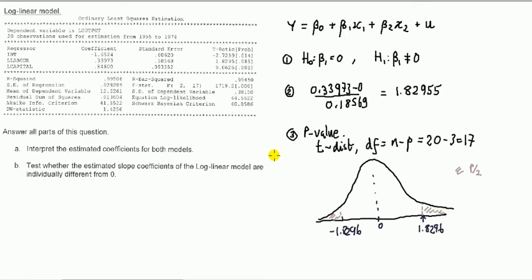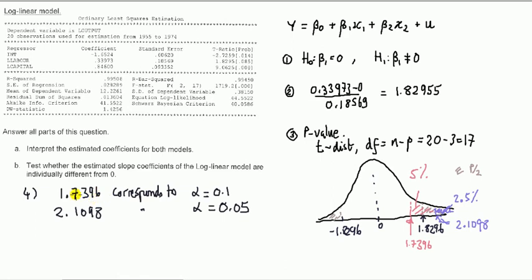In practice it turns out to be a pain because we're using old technology and our tables don't give us every value we need. You're going to find that 1.8296 is not in the table, but it's sandwiched between two values: 1.7396 (which corresponds to 5% in the right-hand tail) and 2.1098 (which corresponds to 2.5% in that tail). We need to double those to get two tails, so the red number becomes 10% and the blue becomes 5%. We are between the two significance levels, so the p-value is between 5% and 10%.